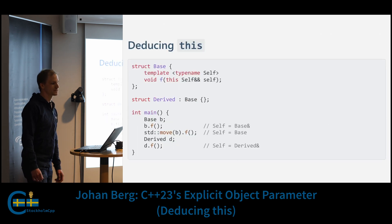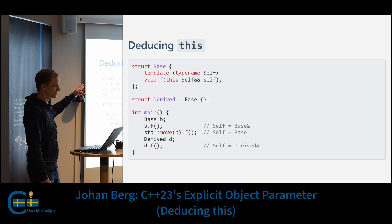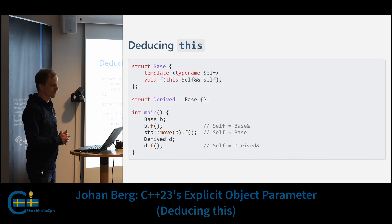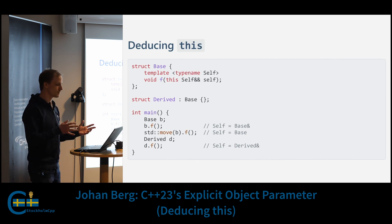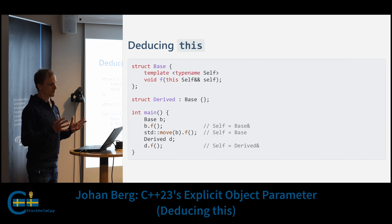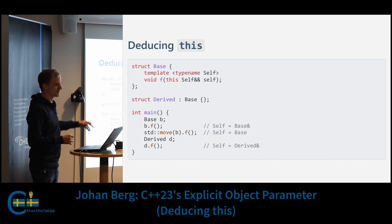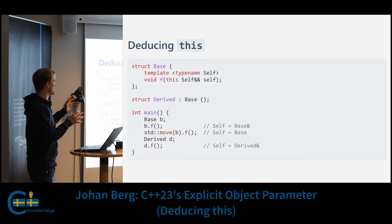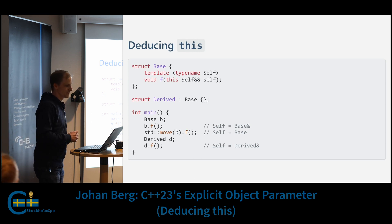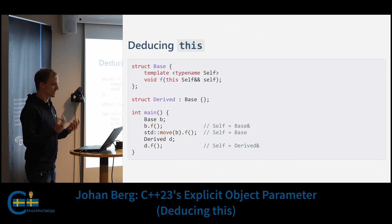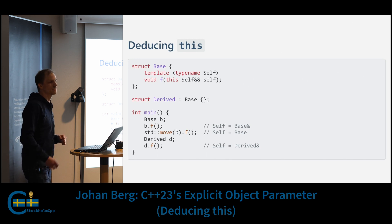This follows the standard C++ rules for template argument deduction. Here we have a base class with a function f in it and a class that derives from base. Inside the main function we create an object of type base, and when we call f on that object, self will be deduced to reference to base. The more interesting case is when we have an object of type derived — because the function f is a function template, self will be deduced to reference to derived, even though the function is declared inside the base class.